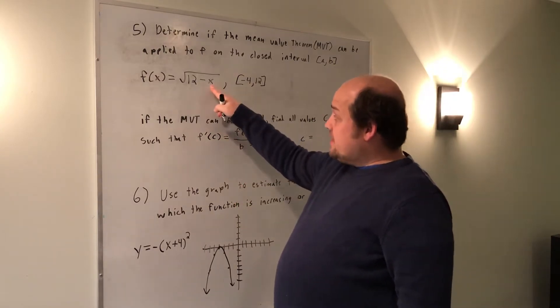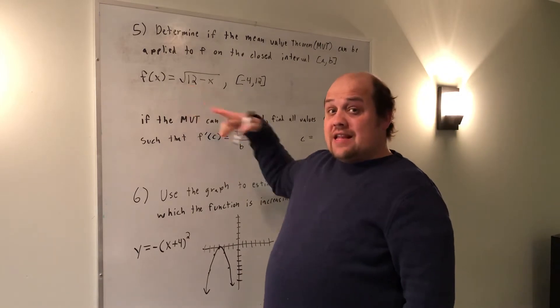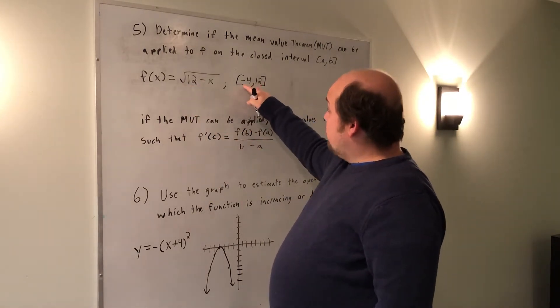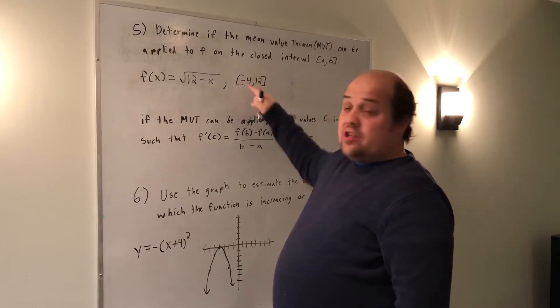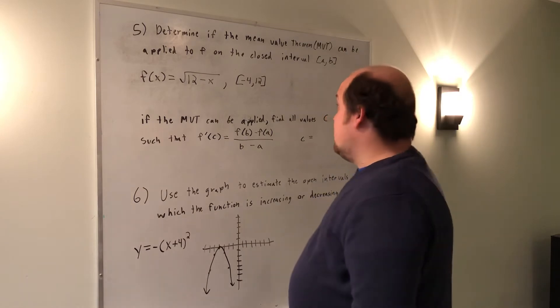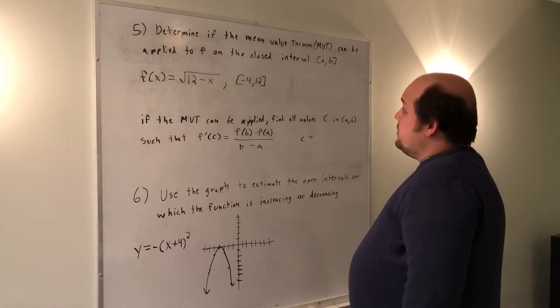If I put in something like 13, I'd get a negative under the root. That's why it's outside of the domain. Since my interval is negative 4 to 12, that is all included in the domain. It is all continuous within that region, which means that I will be able to use the MVT.